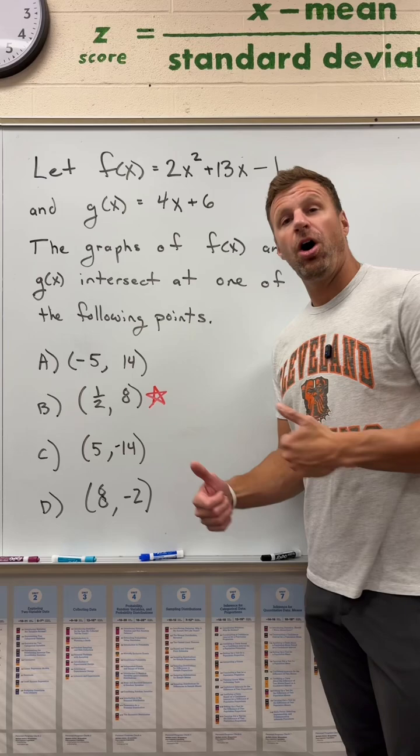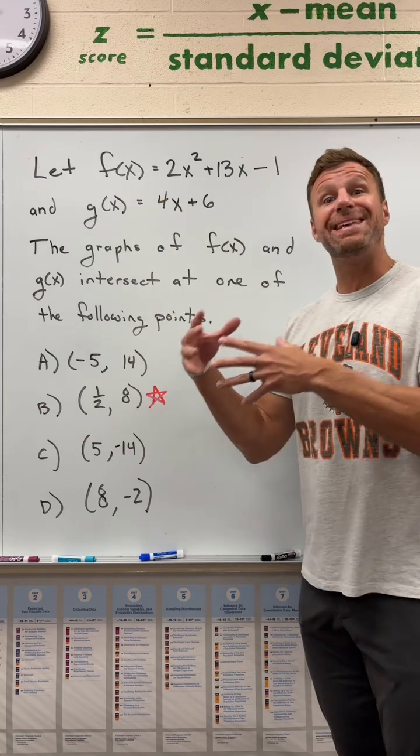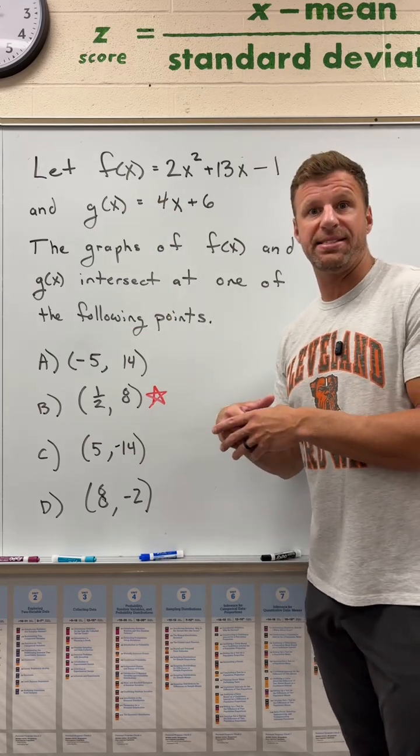And the correct answer is B. Hope you got it right. Now, how do you get it? Well, one of the easiest ways to get this problem correct is to use Desmos, the built-in calculator on the ACT exam.